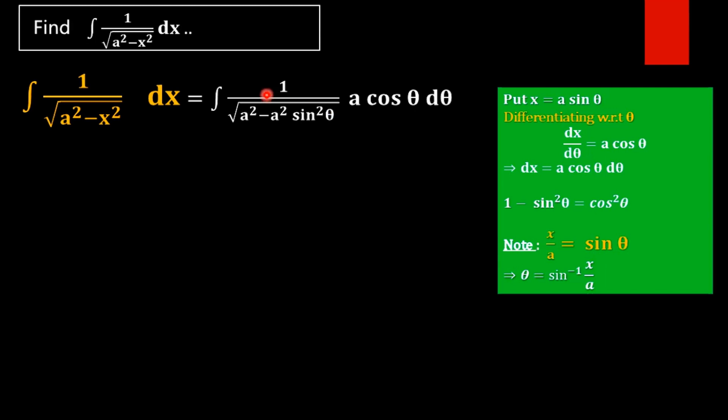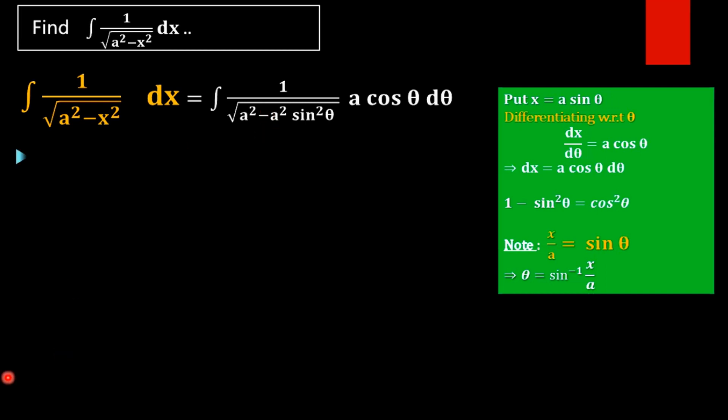So we get the function in terms of theta. Now, what we are going to do in the next step is we are taking a square outside. Then we will get a square into 1 minus sin square theta into a cos theta d theta.